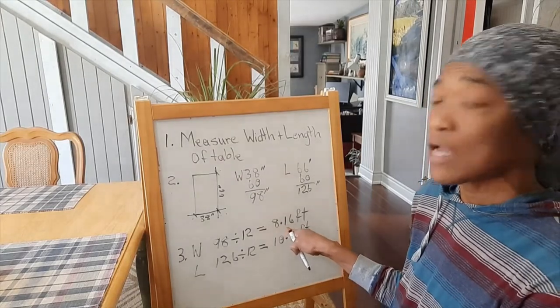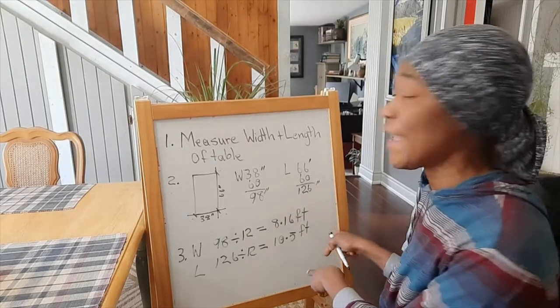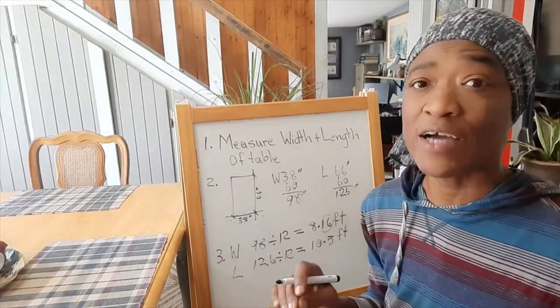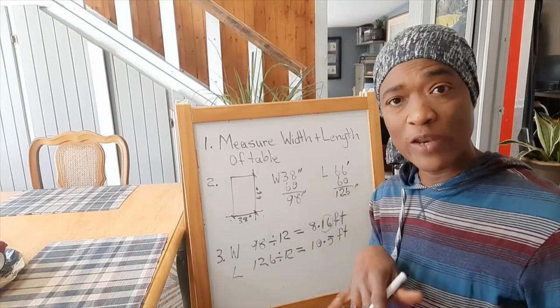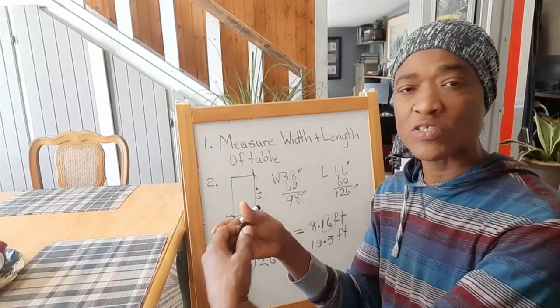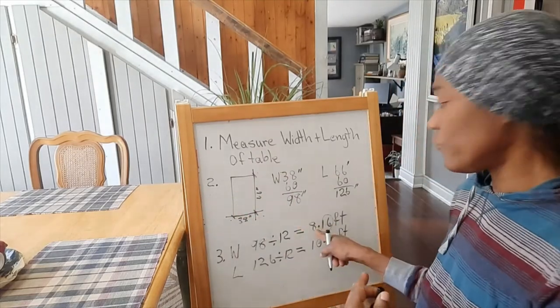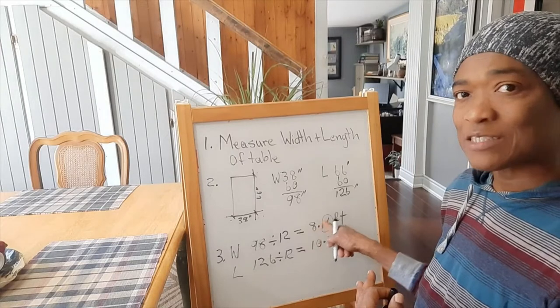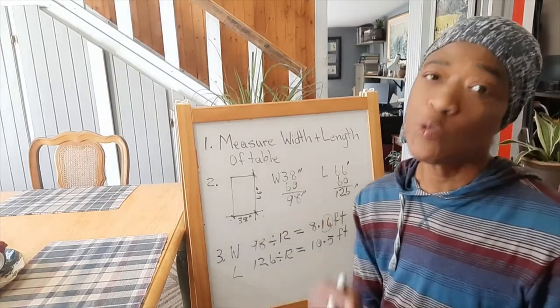Or you could use 10 feet. You could actually do two calculations—one with 24 inches and one with 30 inches—so if you go to the store and don't find a rug that's exactly 8 by 10.5, and you find something in between, you'll know if it's good enough for your table.